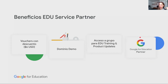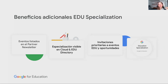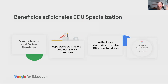Otro valor añadido es que los añadimos a un grupo privado para partners que se dedican a servicios educativos, y constantemente los invitamos a lanzamientos de productos, novedades de los programas, sesiones de preguntas y respuestas sobre las certificaciones. Y finalmente, pueden utilizar la insignia de Google for Education Partner. Una vez que ya alguien es Education Service Partner, hay un peldaño adicional: un programa mucho más especializado que se llama Education Specialization. Los beneficios adicionales incluyen que los listamos en el Partner Newsletter, pueden estar visibles como empresa en el directorio de Google Cloud y en el directorio de Google for Education, y les hacemos invitaciones prioritarias para oportunidades de Google for Education, a veces por asignación directa de algún proyecto grande.